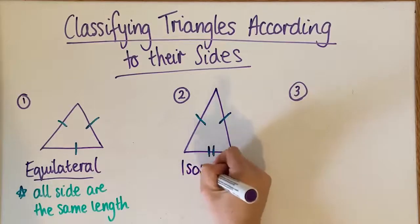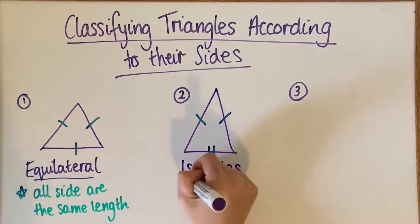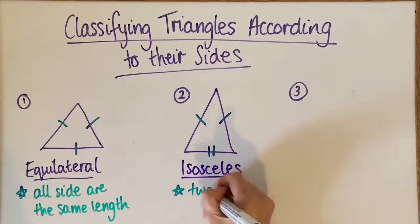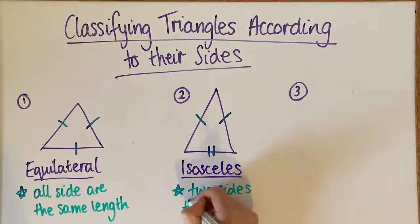So isosceles - it's spelled unusually - but they have two sides the same and one side is different.